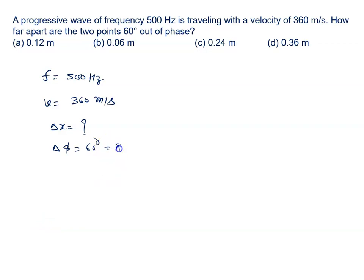60 degree aapko diya rakha hai. The relationship is delta phi equals 2pi upon lambda into delta x. We need to find delta x, so delta x equals lambda upon 2pi into delta phi. Now we need to find the value of lambda.